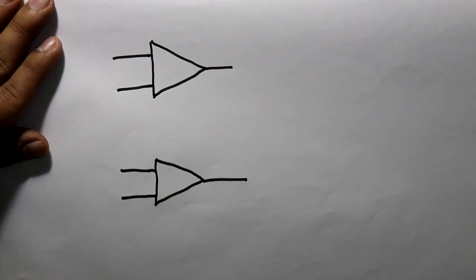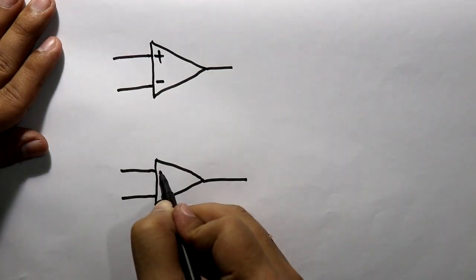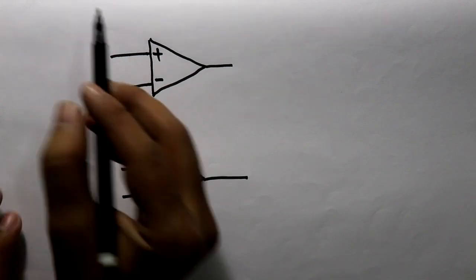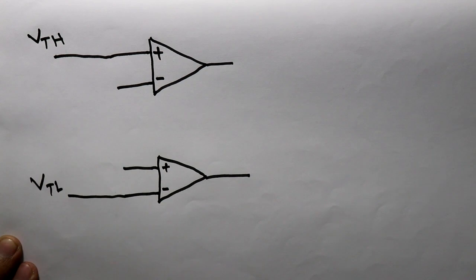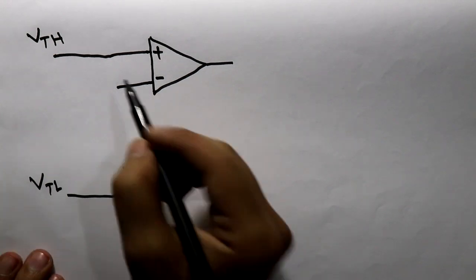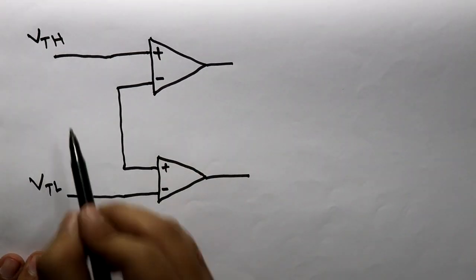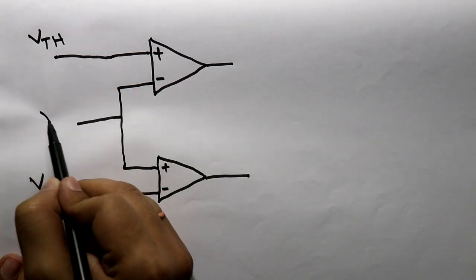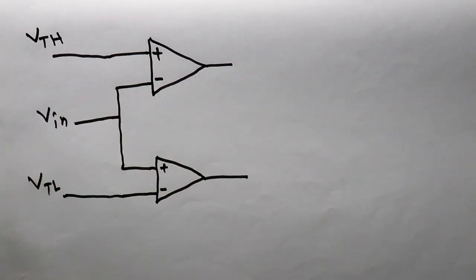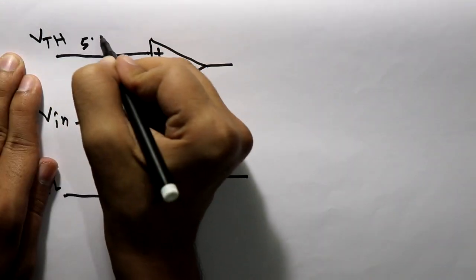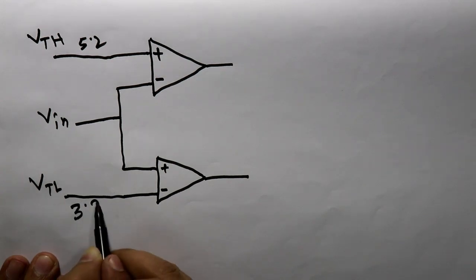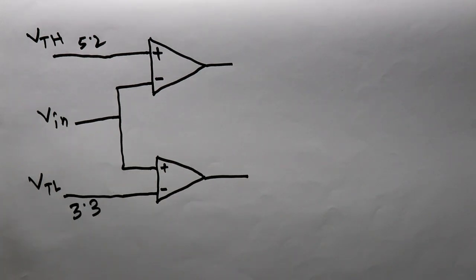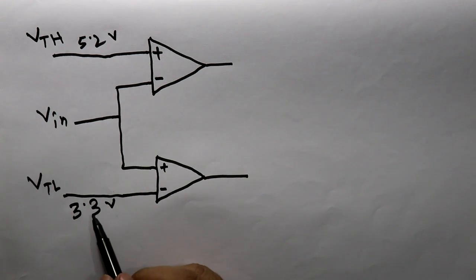To design a window comparator we need two general comparators with their inverting and non-inverting pins. We will connect V_TH to one pin and V_TL to another pin, connect both outputs together, and supply the input voltage. I will apply 5.2 volts for V_TH and 3.3 volts for V_TL.